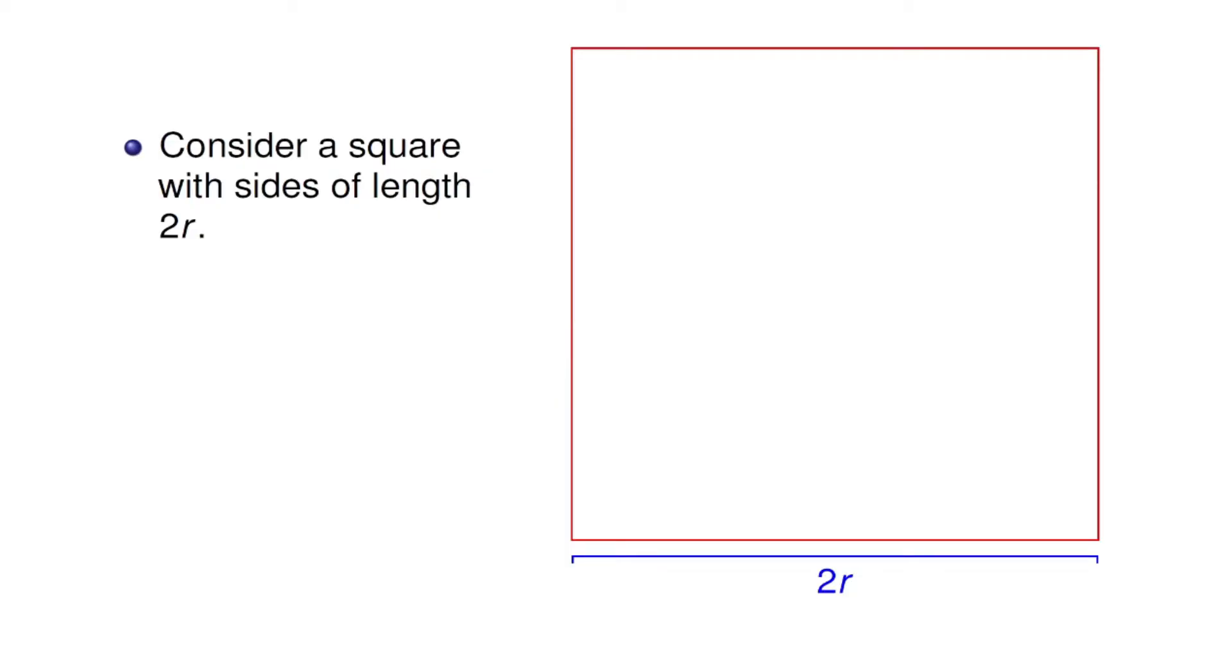First, let's consider a square with the size of length 2 times r. Then the area of this square is going to be S_square equals the square of 2 times r, which equals 4 times the square of r.